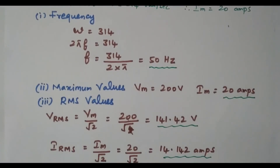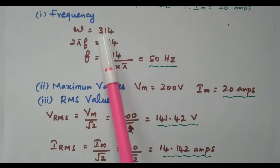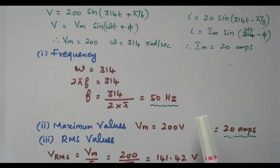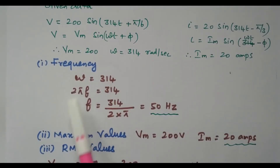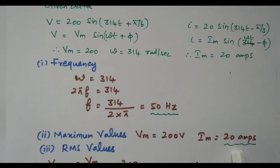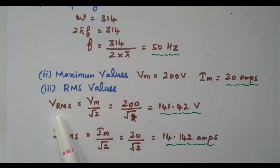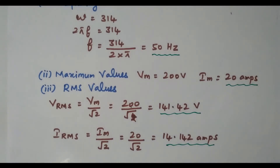Finding parameters one by one: Frequency — ω = 314, and since ω = 2πf, f = 314 / (2π) = 50 Hz. Maximum values: Vm = 200 volts, Im = 20 amperes. RMS values: VRMS = Vm / √2 = 200 / √2 = 141.42 volts; IRMS = Im / √2 = 20 / √2 = 14.142 amperes. Average values: Vavg = 2Vm / π = 2 × 200 / π = 127.32 volts; Iavg = 2Im / π = 2 × 20 / π = 12.732 amperes.